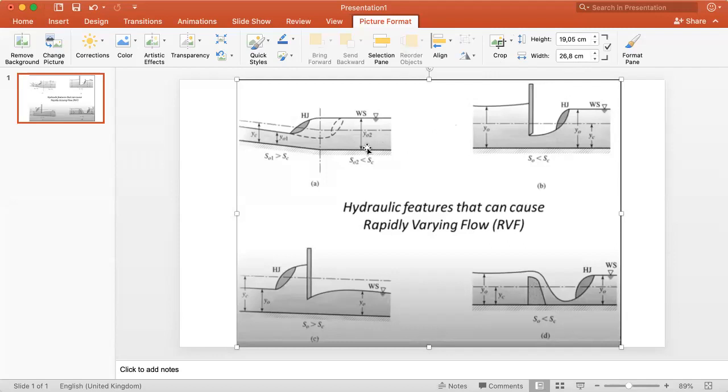For example, in the top left of the slide, it can happen due to a change in the slope from steep to mild. And here you have the height of uniform flow that is smaller than the critical one approaching the change in the slope.